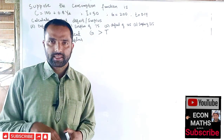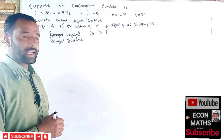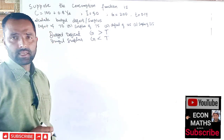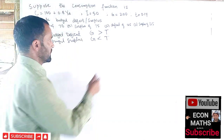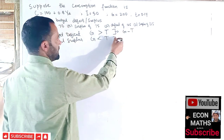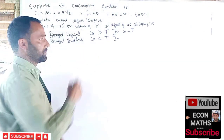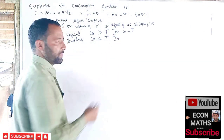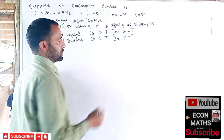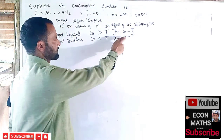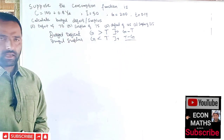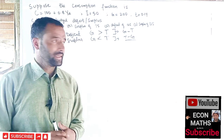When government expenditure is less than the tax revenue, we have budget surplus. To get the budget deficit and its magnitude, we compute G minus T. Similarly, to get the budget surplus and its magnitude, we compute T minus G.